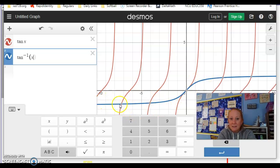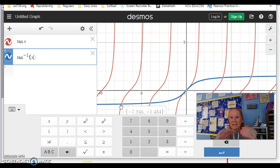It like flopped. So now it has reflected over y equals x. Now my range is -π/2 to π/2. My domain is -∞ to ∞. So the domain and the range just swapped.